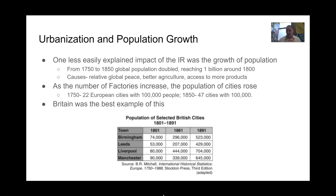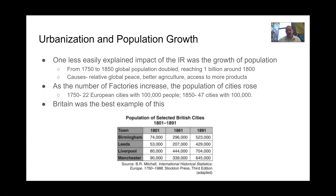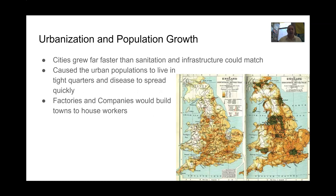Urbanization is drawing people off the land. At the beginning of the 1700s, 80% of Britain's population was making their money from the land, but by the early 1800s that number drops to 40% of the population making their money through the land — just a major change occurring here.